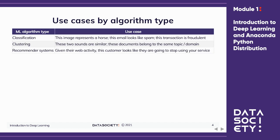The following are examples of deep learning use cases organized by algorithm type. If we are performing classification, we might examine images to see if they contain a horse, or analyze emails to see if they are spam, or perform fraud detection with credit card transactions. If we are performing clustering, we might look to see if two sounds are similar or if two documents belong to the same topic. Finally, we might use recommender systems to see if a customer looks like they are going to stop using a service based on their web activity.